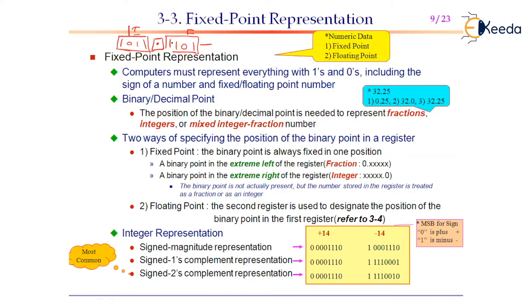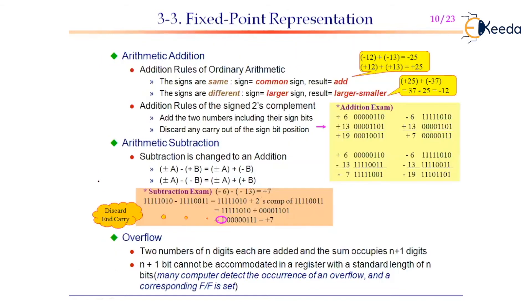Now let us talk about integer representation. We discussed signed magnitude, signed 1's complement, and signed 2's complement. In signed magnitude, the MSB is the sign bit: MSB equal to 0 means positive, MSB equal to 1 means negative. For subtraction, we compute A plus the 2's complement of B — that is, 1's complement plus 1 — which equals A minus B when we discard the end-carry.